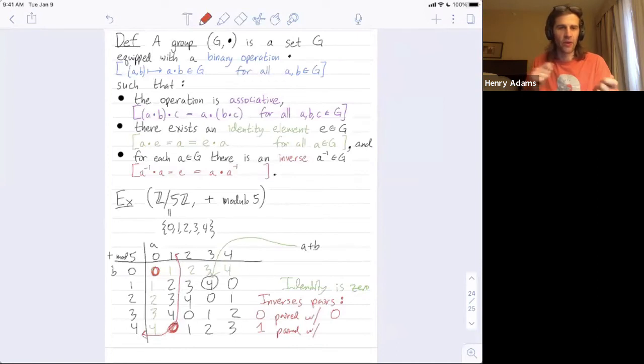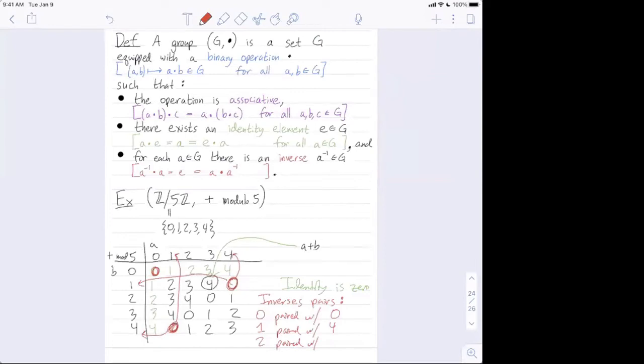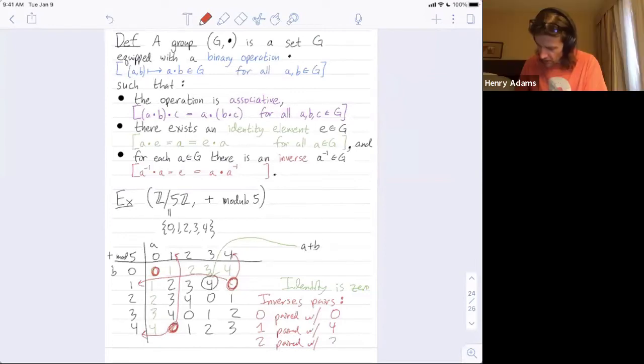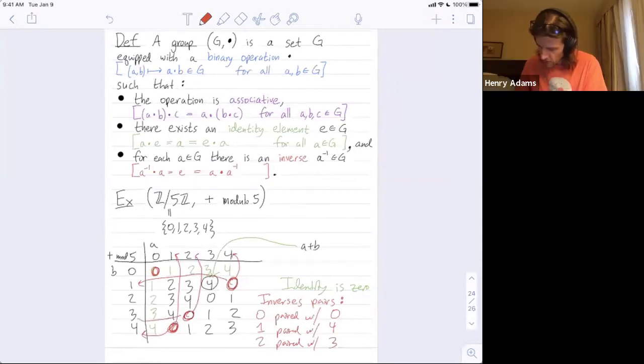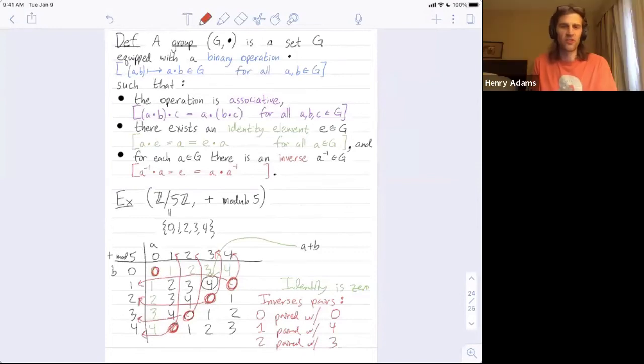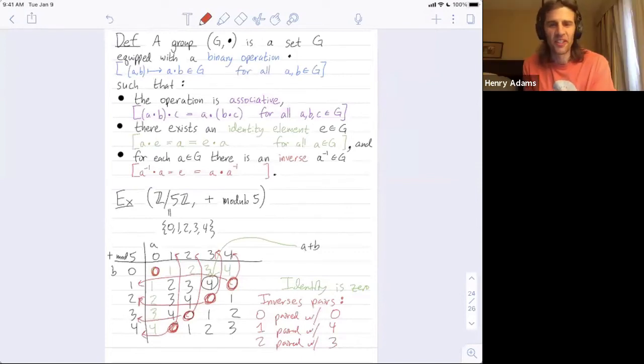So same here. This 0 is telling me that 1 and 4 are inverse pairs. And then who's 2 paired with? 3. 3. Precisely. Yeah. So this 0 is telling me that 2 is 3's inverse. Because 2 combined with 3 gives me 0. And this 0 is telling me that 3 is 2's inverse. Same thing. Yeah. Just because 3 plus 2 is 5. Mod 5 remainder 1 divided by 5 gives me 0.